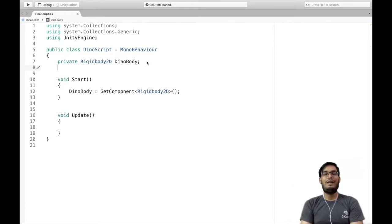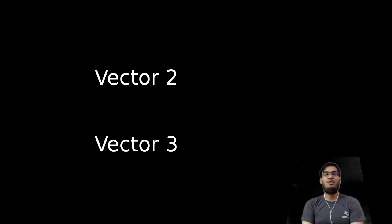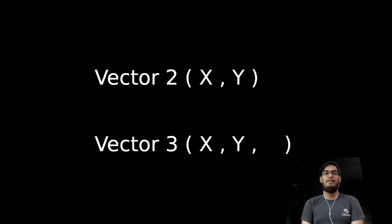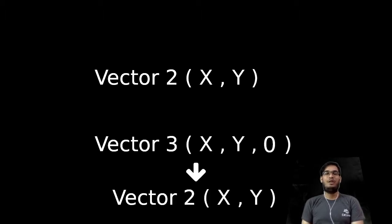Now let's learn a new concept called vectors. Generally, vectors are of two types: Vector2 and Vector3. Vector2 contains two parameters — x value and y value. Vector3 contains three values — x, y, and z. You can use Vector2 whenever you have two inputs x and y, and Vector3 whenever you have three inputs x, y, and z. Also in Vector3, if you leave the third value empty or assign it to 0, it starts to work as Vector2.